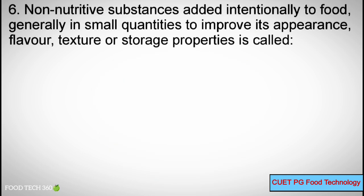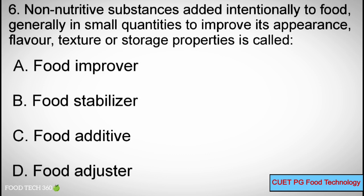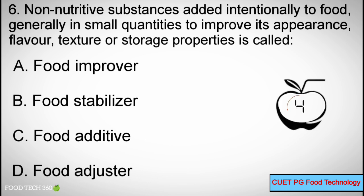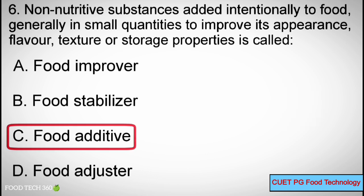Question number 6. Non-nutritive substances added intentionally to food, generally in small quantities, to improve its appearance, flavor, texture, or storage properties is called: Options: A. Food Improver, B. Food Stabilizer, C. Food Additive, D. Food Adjuster. Correct answer: C. Food Additive.